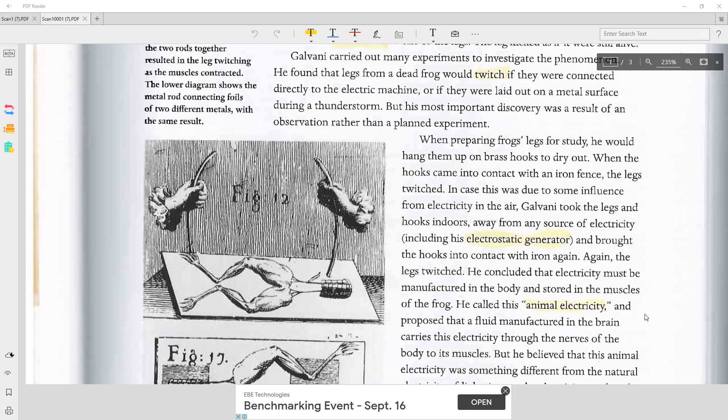When preparing frog's legs for study, he would hang them up on brass hooks to dry out. When the hooks came into contact with an iron fence, the legs twitched.